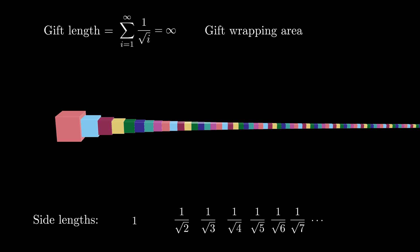Therefore, we have to at least enclose a surface area of 4 times 1 over i for each cube. This means that the gift wrapping area is going to be greater than or equal to the sum where i ranges from 1 to infinity of 4 times 1 over i. But this is 4 times the harmonic series which diverges, so this sum is also infinite.